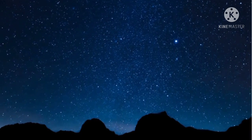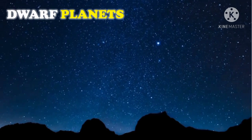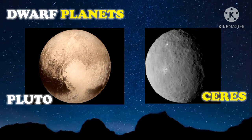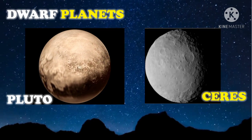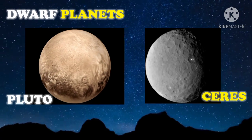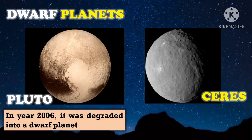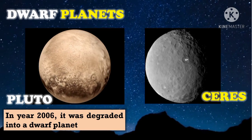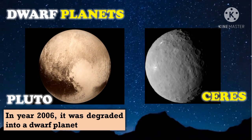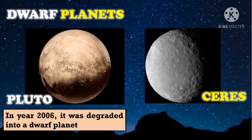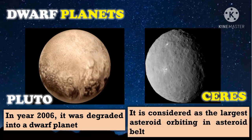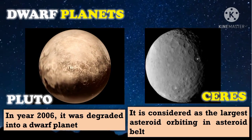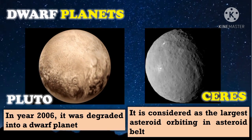Now, let us go to the dwarf planets. Some examples of dwarf planets are Pluto and Ceres. Pluto is a dwarf planet beyond Neptune. It used to be considered a planet, but in the year 2006, it was reclassified as a dwarf planet because it did not meet the International Astronomical Union's criteria for planets. Ceres is considered the largest asteroid orbiting between Mars and Jupiter, and has self-gravity which makes it round and qualifies it as a dwarf planet.